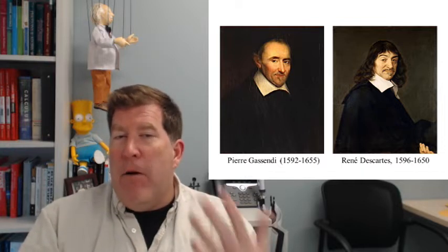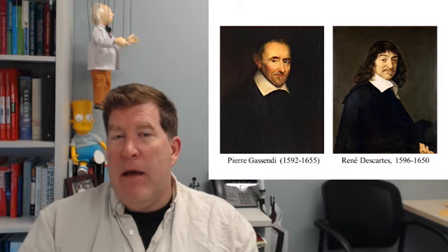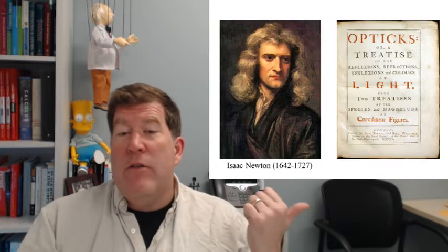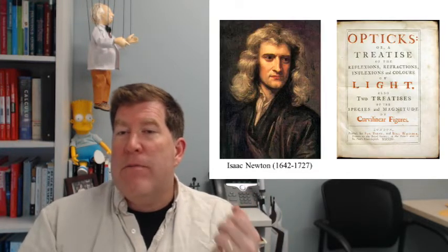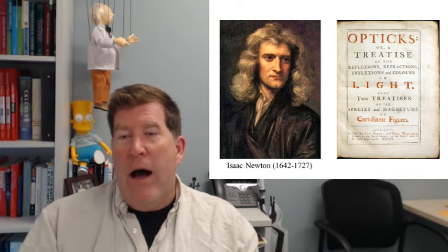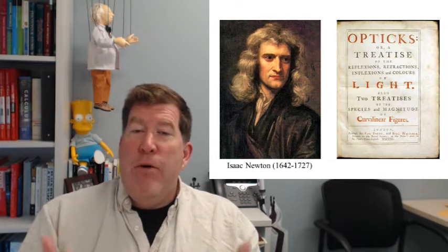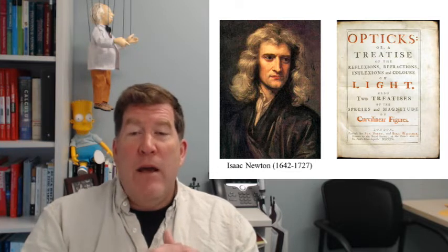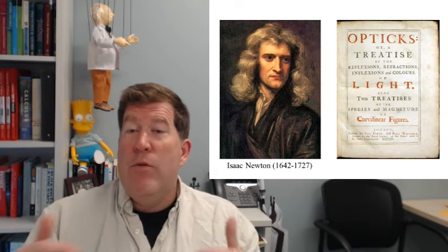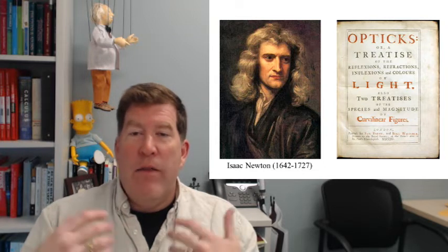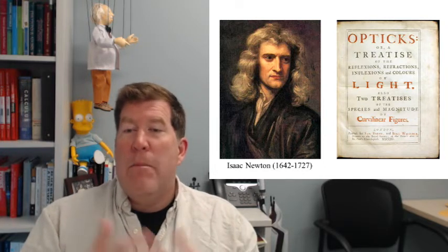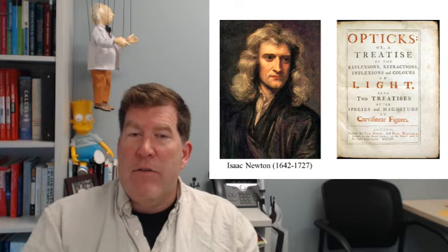The most prominent proponent of this theory ended up being this fellow, Sir Isaac Newton, in his book On Optics, published in 1704, spelled sort of differently at the time. And Newton put forth an enormous array of phenomena having to do with the behavior of light, the reflection, refraction, the colors, the bending of light under various circumstances.